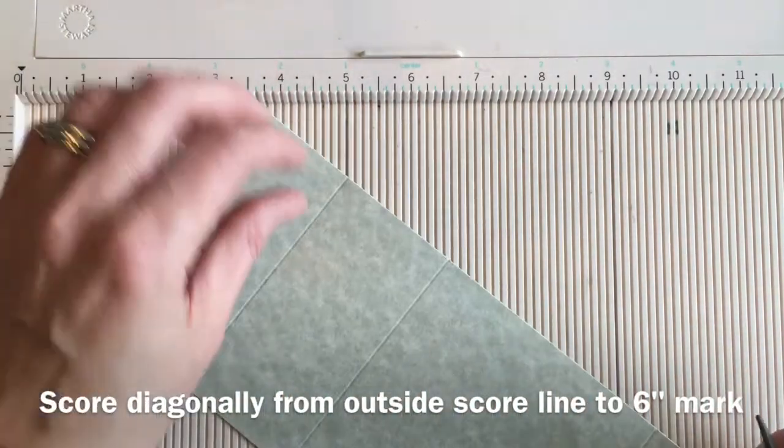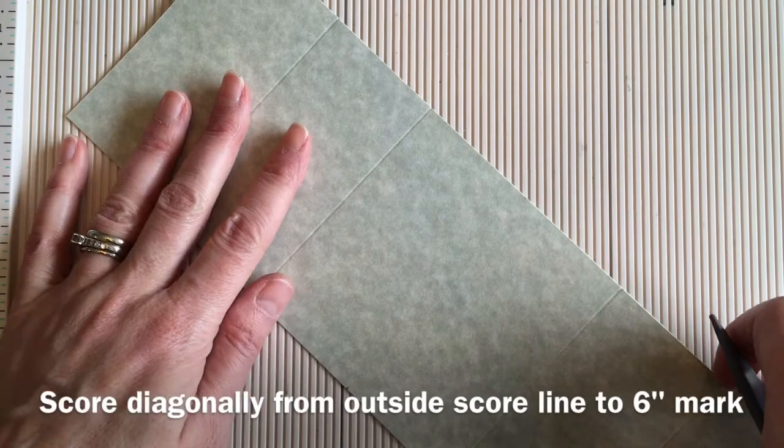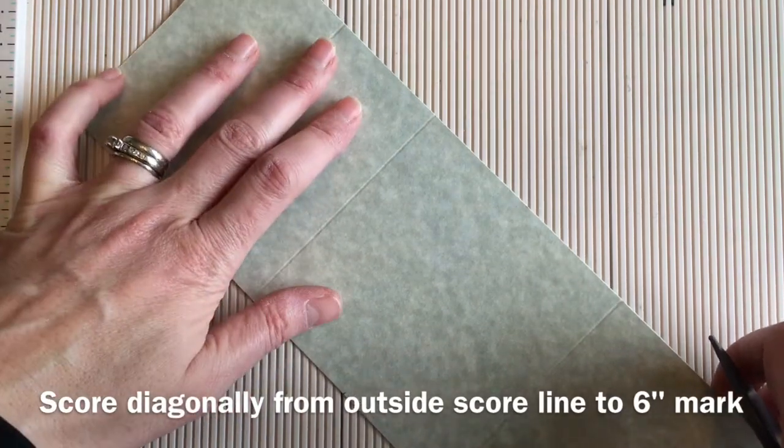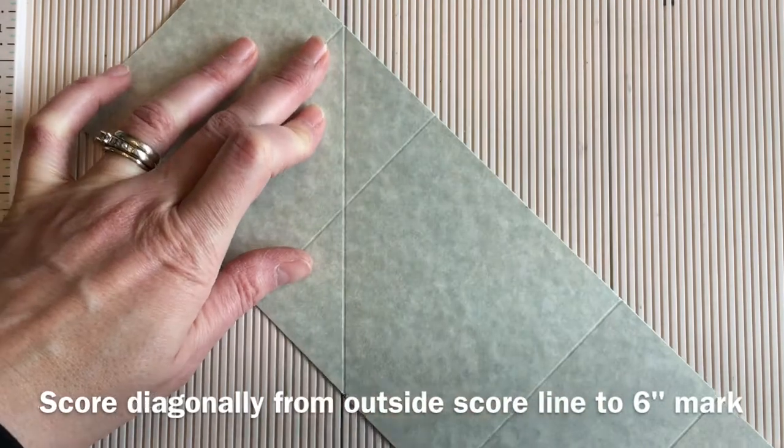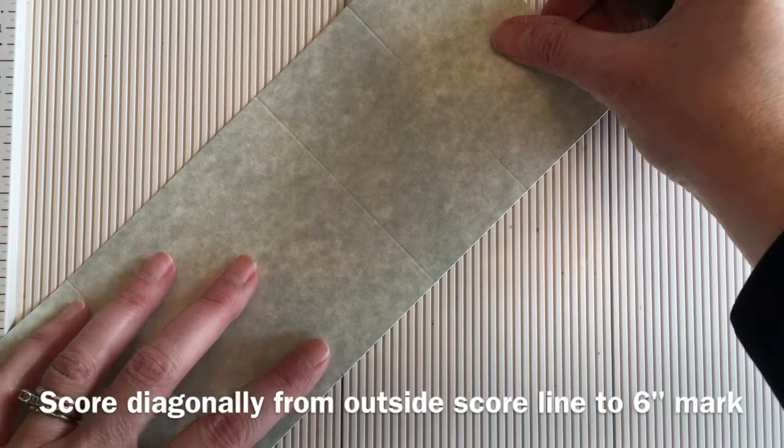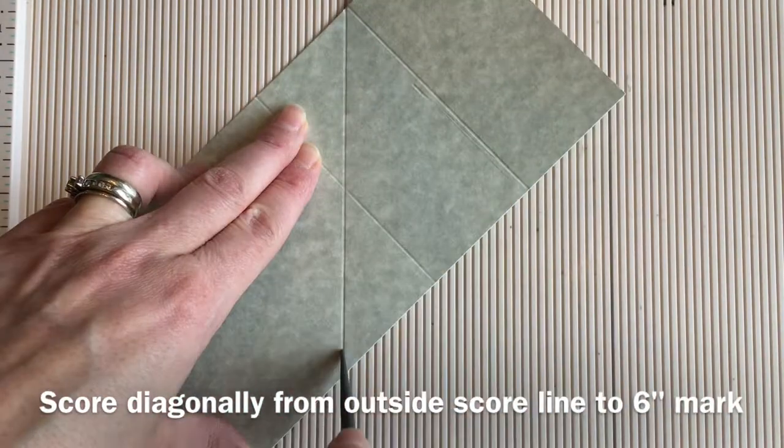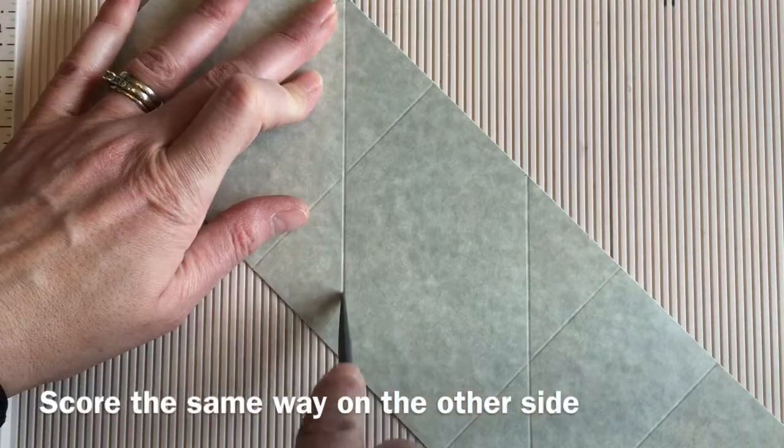And then you saw me making some little marks at the six inch line. Then I'm lining up that furthest score line with the six inch dot. So I'm doing that diagonal score. This is going to give you your diamond fold in the middle and I'm doing that on each side.